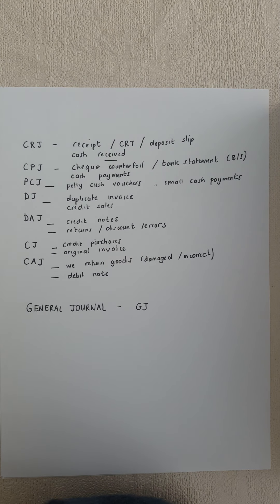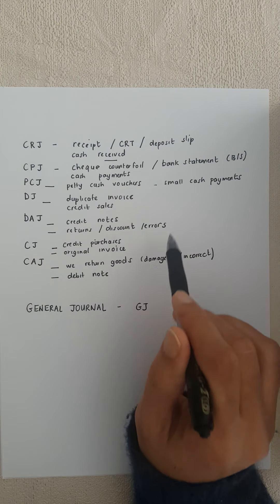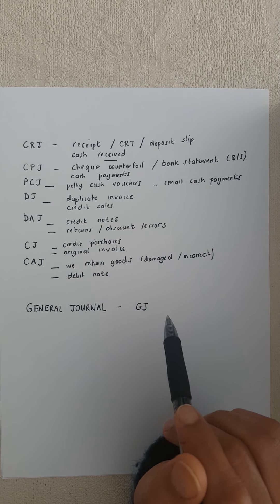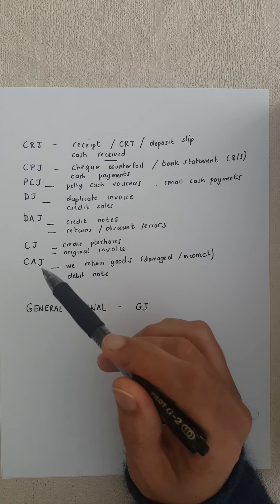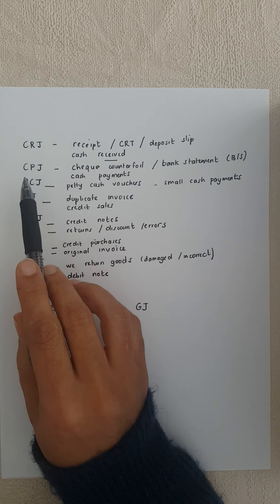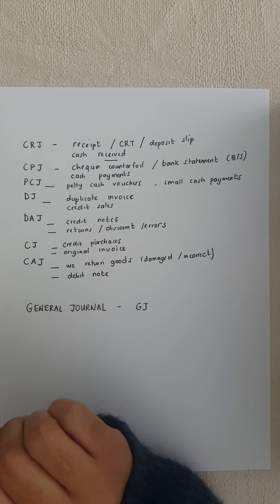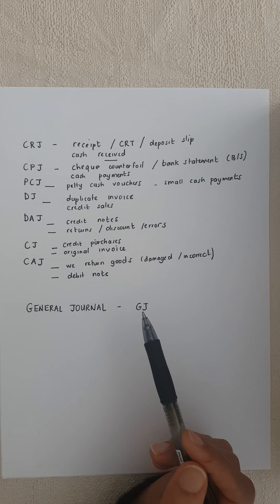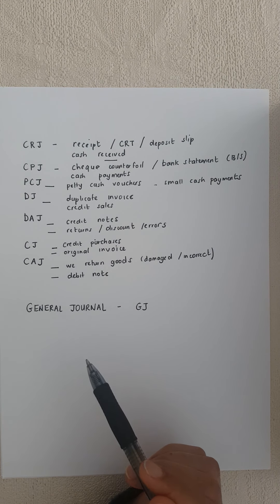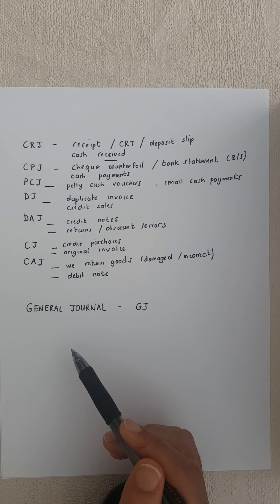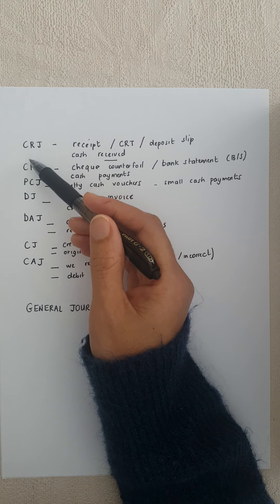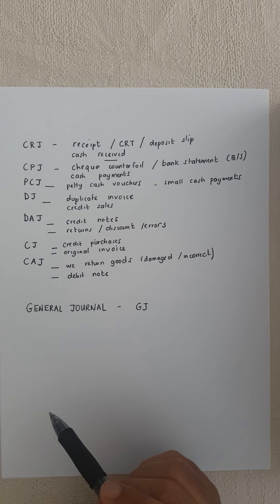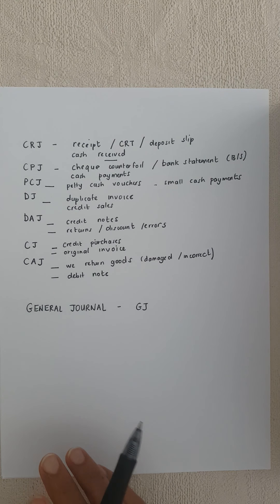So we've been through all the journals and all the transactions, along with the important source documents you need to know. We've also done the general ledger postings for all of these journals. Remember, these journals are done on a daily basis, recorded for one month, and at the end of the month you post to the general ledger. Now we're moving on to the general journal. We have a general journal because sometimes a transaction cannot fit into any of these other journals, so we'll go through all the different types of general journal entries and examples.